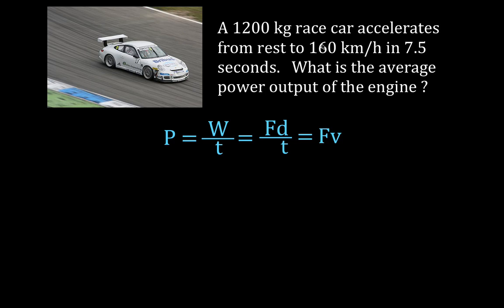We have to convert the velocity into meters per second. 160 kilometers per hour is equal to about 100 miles per hour, which is equal to about 44.7 meters per second. Now we know the velocity. We can calculate the average velocity just by dividing the final velocity by two, but we need to calculate the force first.